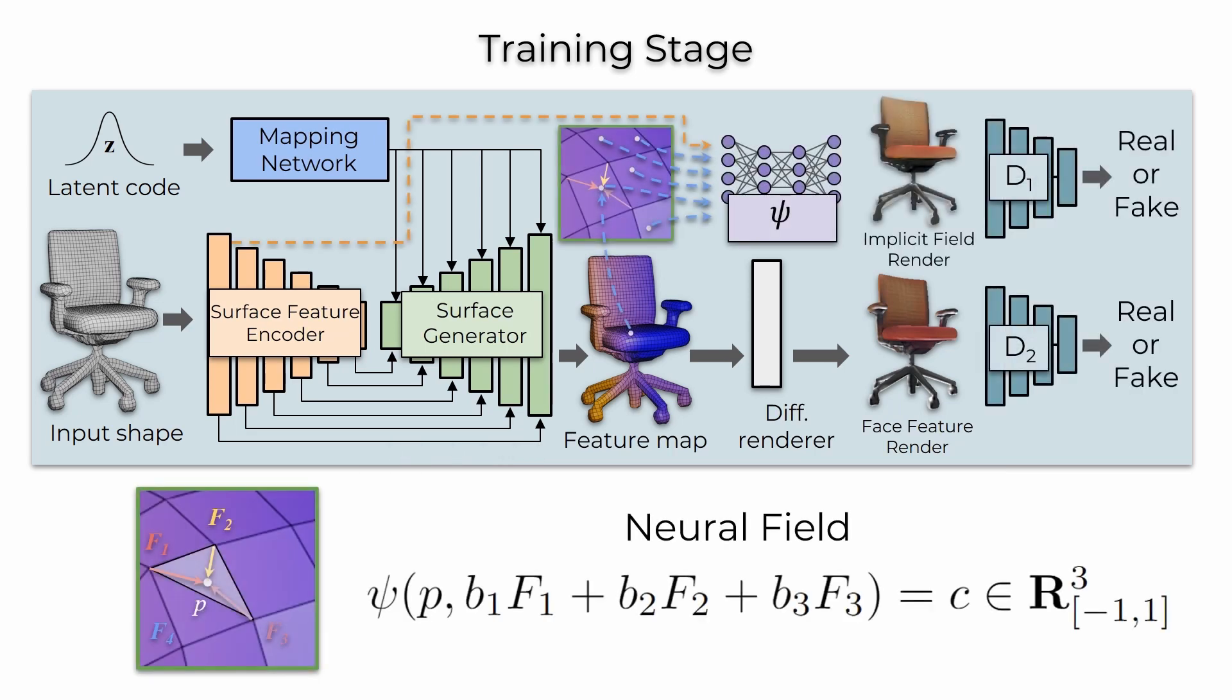These features are input to the local neural field psi, operating in the barycentric coordinate space of the mesh faces, which produces the final output colors.